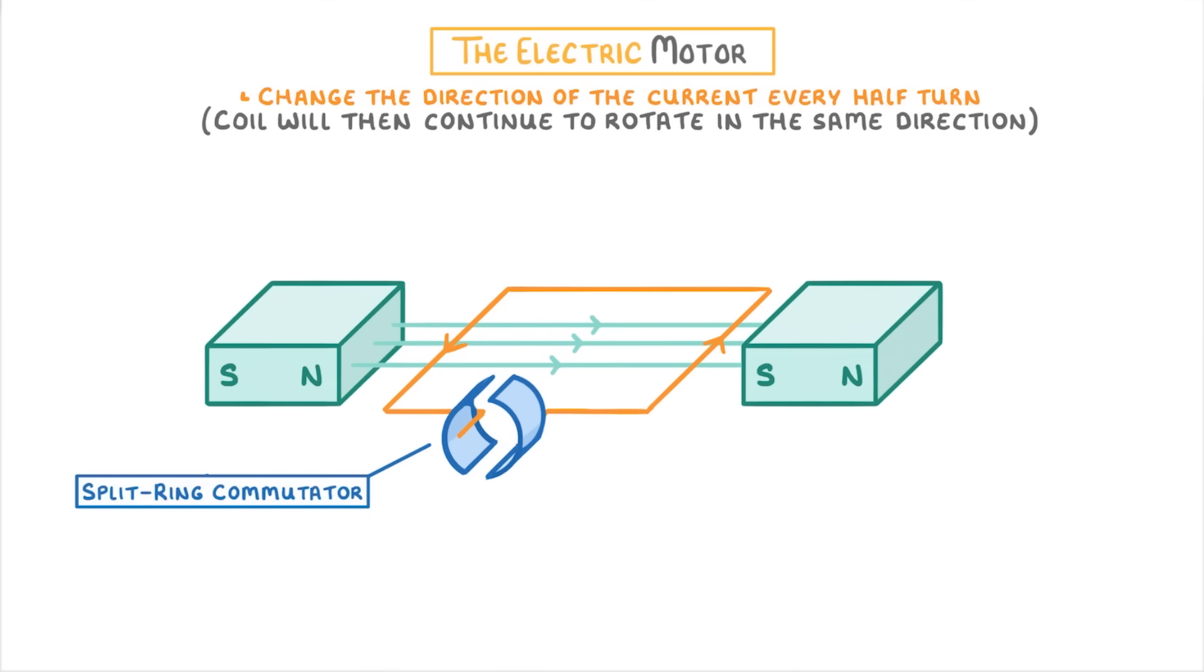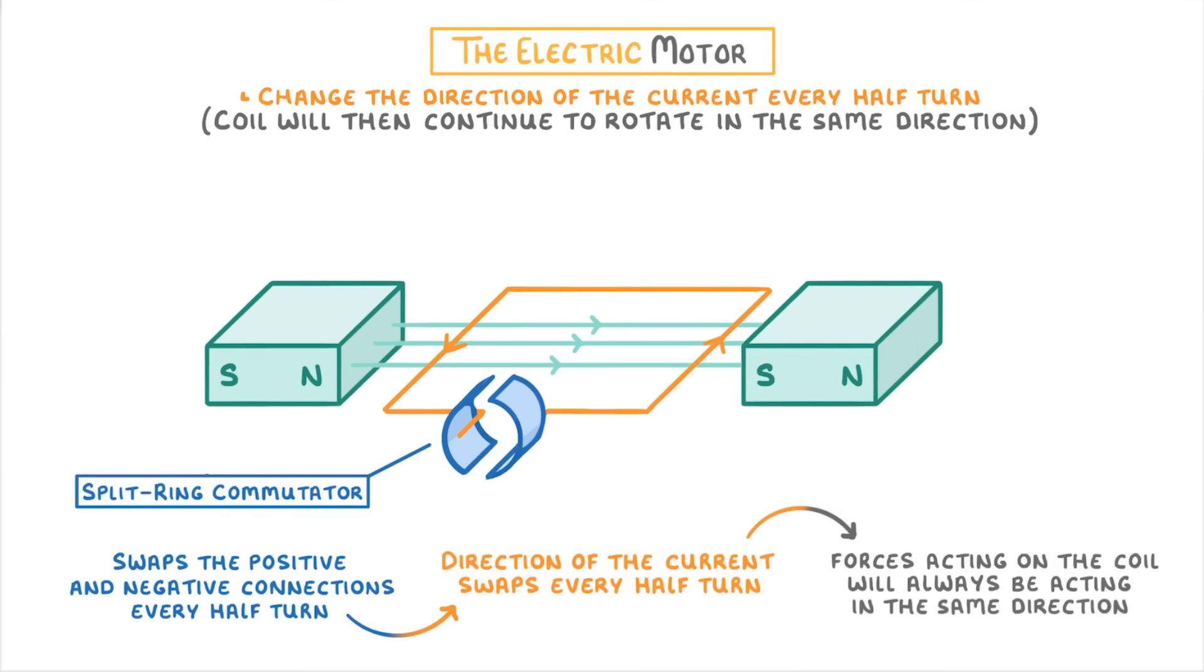For your exam, what you'll be expected to know is that it swaps the positive and negative connections every half turn, so that the direction of the current also swaps every half turn. This means that the forces acting on the coil will always be acting in the same direction, which importantly means that the coil will rotate in the same direction all the time.